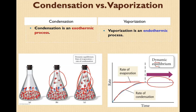Condensation is an exothermic process, meaning that when the molecules condense — when they go from a gas back to a liquid — they're releasing energy in the process. Whereas vaporization is an endothermic process. When going from a liquid to a gas, the liquid is absorbing energy, making the molecules move faster and then escape.